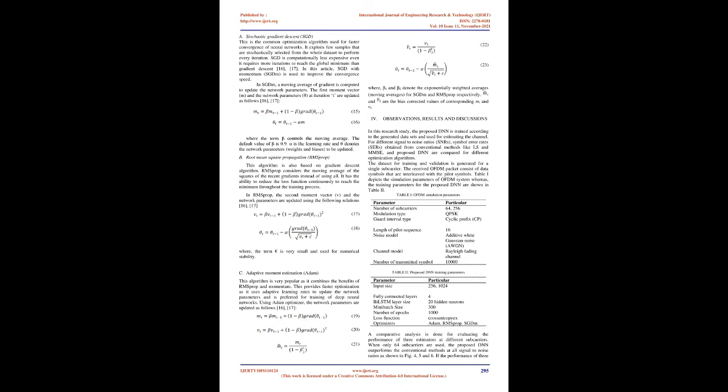A. Stochastic Gradient Descent (SGD): This is the common optimization algorithm used for faster convergence of neural networks. It exploits few samples that are stochastically selected from the whole dataset to perform every iteration. SGD is computationally less expensive even though it requires more iterations to reach the global minimum than gradient descent. In this article, SGD with momentum (SGDM) is used to improve the convergence speed. In SGDM, a moving average of gradient is computed to update the network parameters. The first moment vector (m) and the network parameters (θ) at iteration t are updated as follows, where the term β controls the moving average. The default value of β is 0.9. α is the learning rate, and θ denotes the network parameters (weights and biases) to be updated.